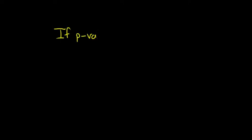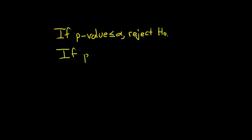So before we do that, there's one key thing we need to know. If you're doing a hypothesis test and your p-value is less than or equal to your alpha — that's your level of significance — you want to reject H₀. And if your p-value is strictly greater than your alpha, which is your level of significance, you're going to fail to reject H₀.